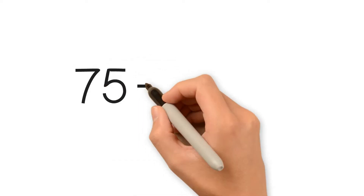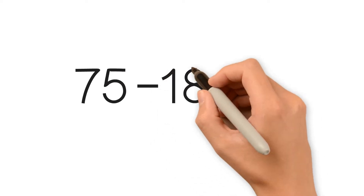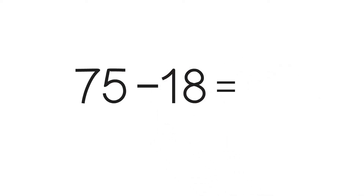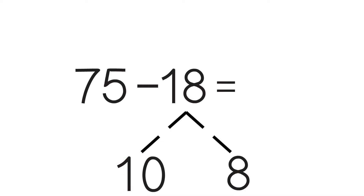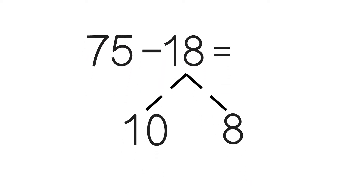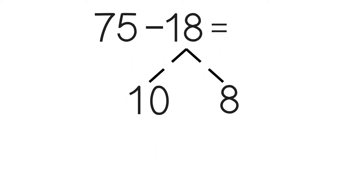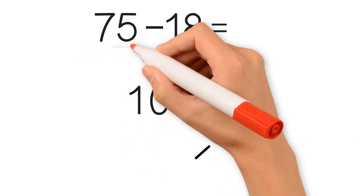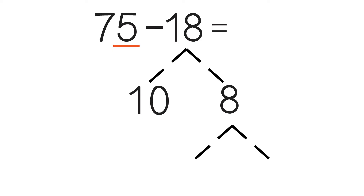Let's try another example. 75 minus 18 is equal to... First, we break apart 18 into 10 and 8. Because 8 is bigger than 5, it's harder to subtract, so we break it up into 5 and 3, because 5 minus 5 is going to be easy to solve.